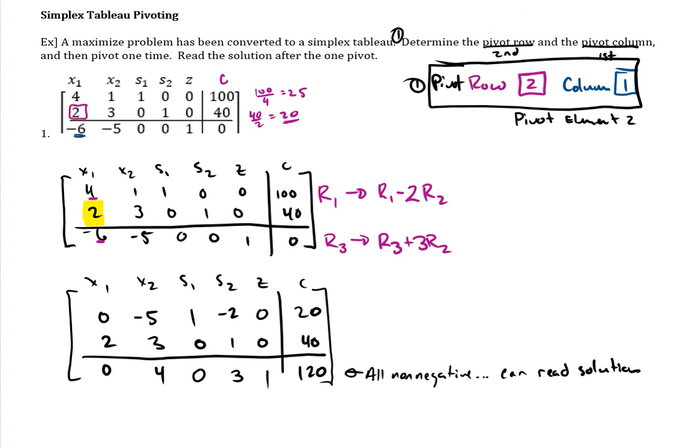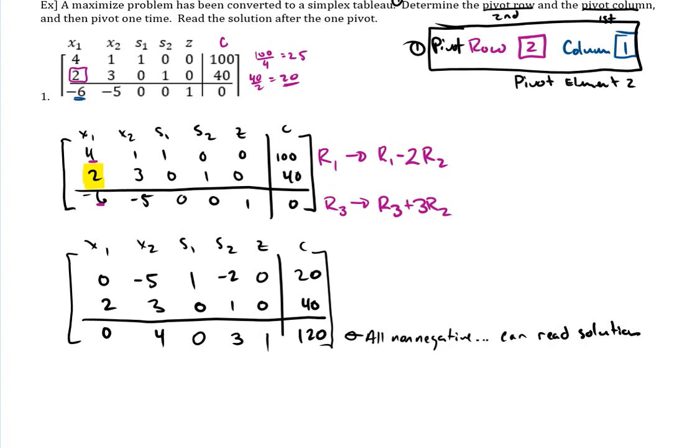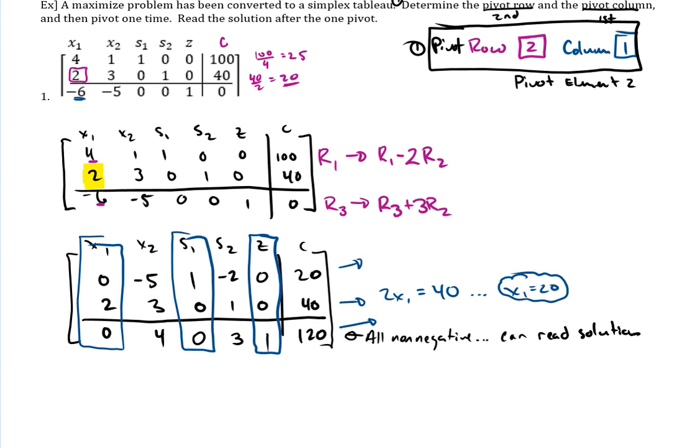And then just be very careful with this. So I've got negative 6 plus 3 times 2, yeah that is 0. Good. And then now I need to be extra careful on all these others. Row 3 right here, I've got negative 5 plus 3 times 3 is 9, so that would become a positive 4. So negative 5 plus 9 is positive 4. Both of these are 0, so 0 plus 0 is 0 again. Then we've got 0 plus 3 times 1, so 0 plus 3 would be 3. Then in our z column we have 1 plus 3 times 0 is 1. And then the last one we have 0 plus 3 times 40 would be 120.